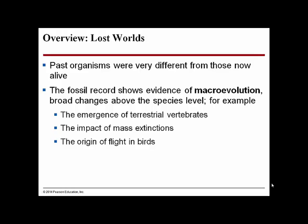Past organisms were very different from those alive today. We can easily see this based on the fossil record. The fossil record shows evidence of macroevolution — broad changes above the species level. For example, the emergence of terrestrial vertebrates from fish and amphibians, the impact of mass extinctions such as the demise of the dinosaurs 65 million years ago, and the origin of flight in birds some 90 to 100 million years ago. This distinguishes macroevolution from microevolution, which involves changes in species or populations.